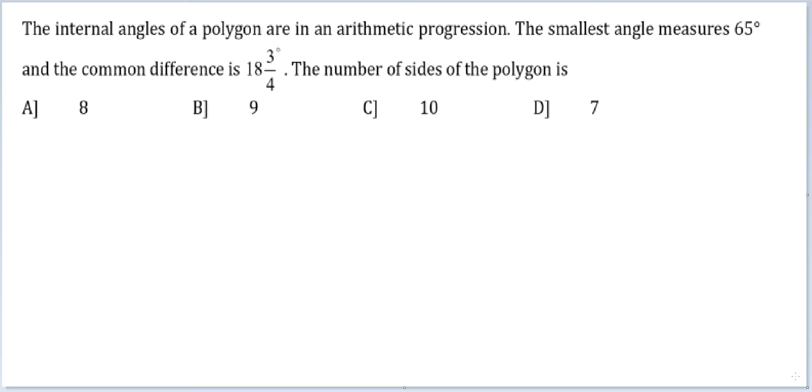Now whenever they're talking about internal angles of a polygon, this should trigger in your head: pay attention to the external angles of the polygon. The sum of internal angles is different for every polygon, but for external angles the sum is always 360 degrees.